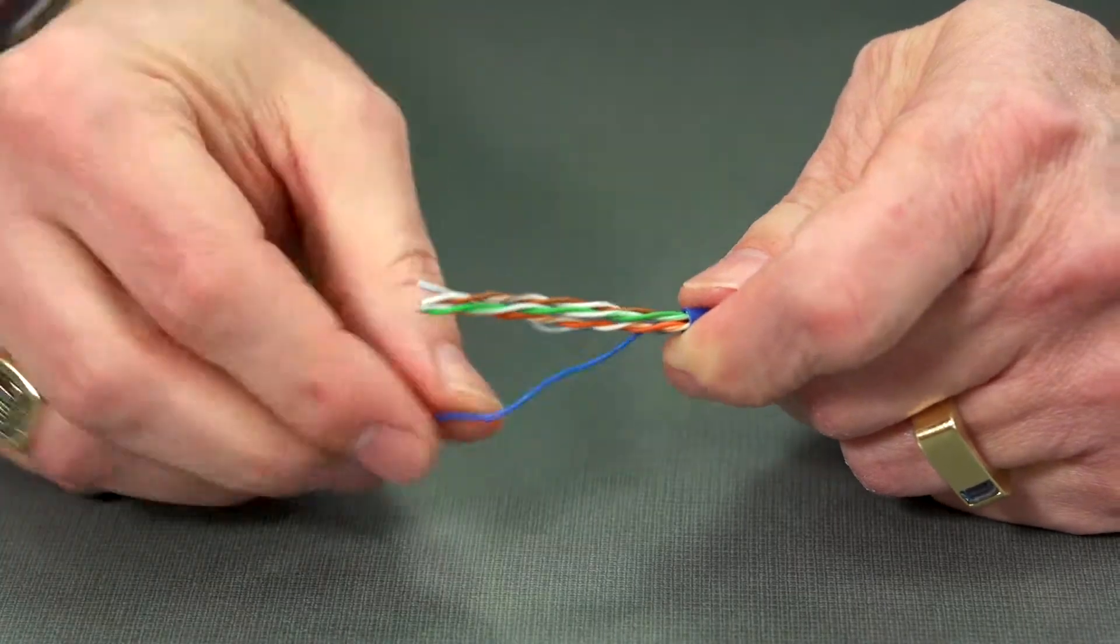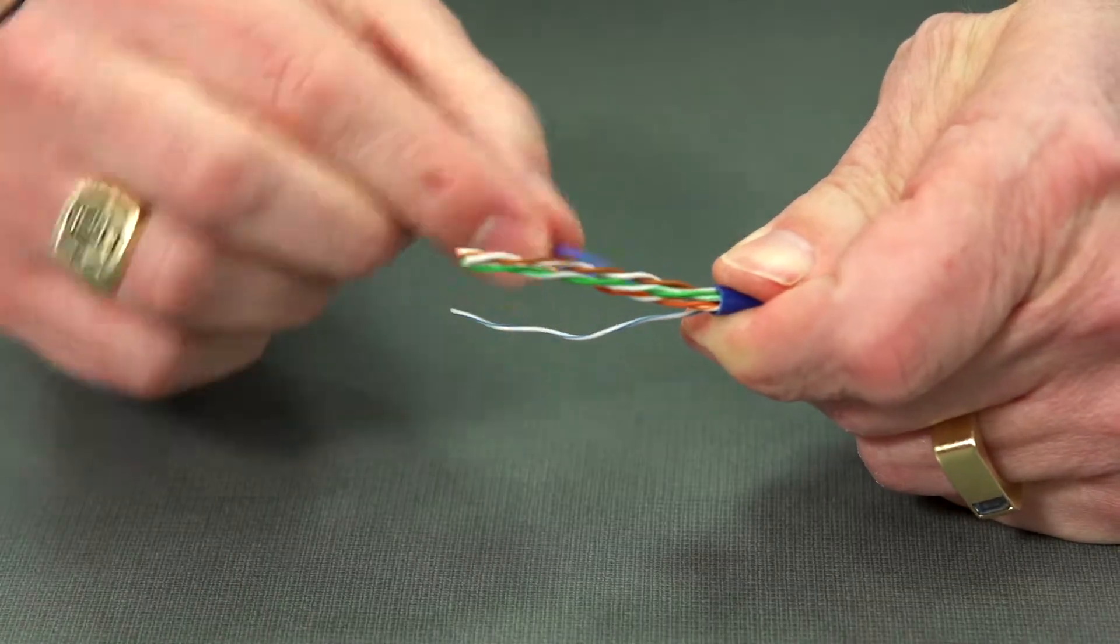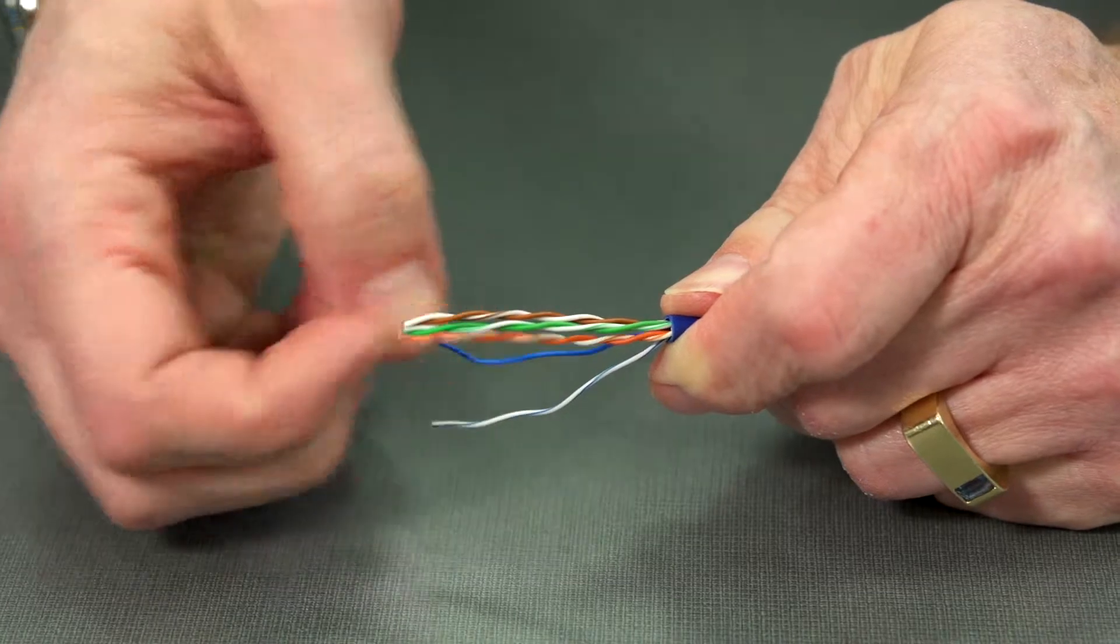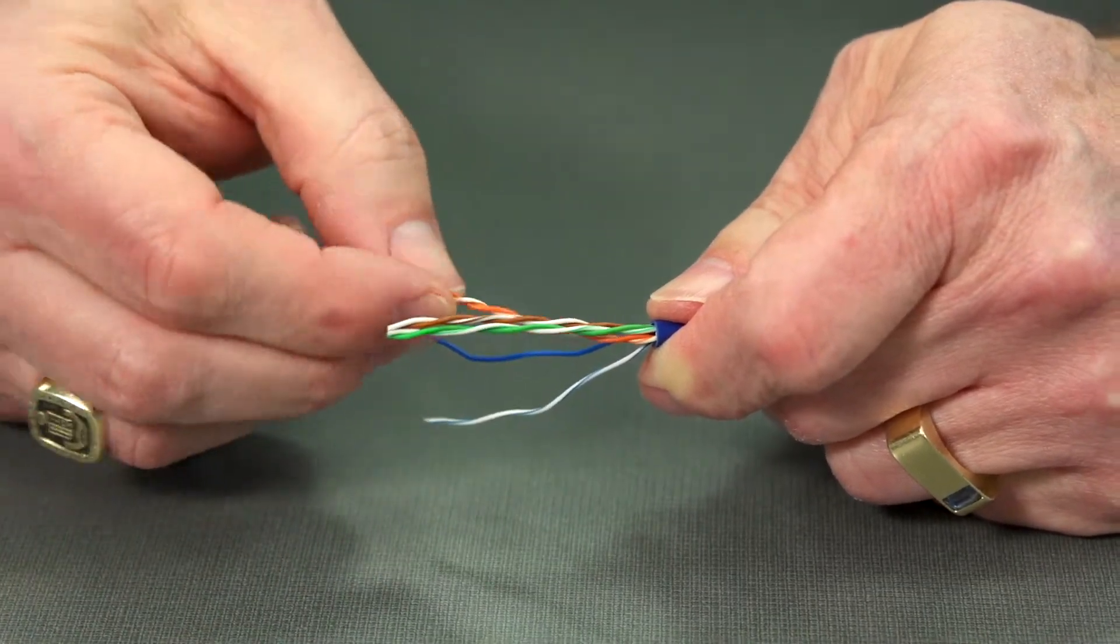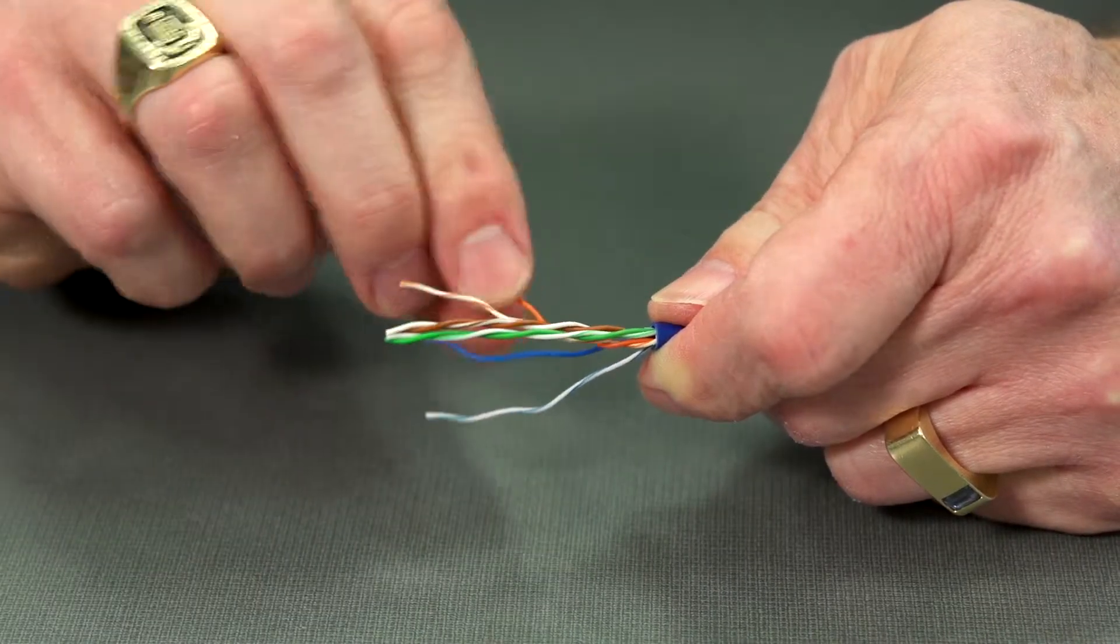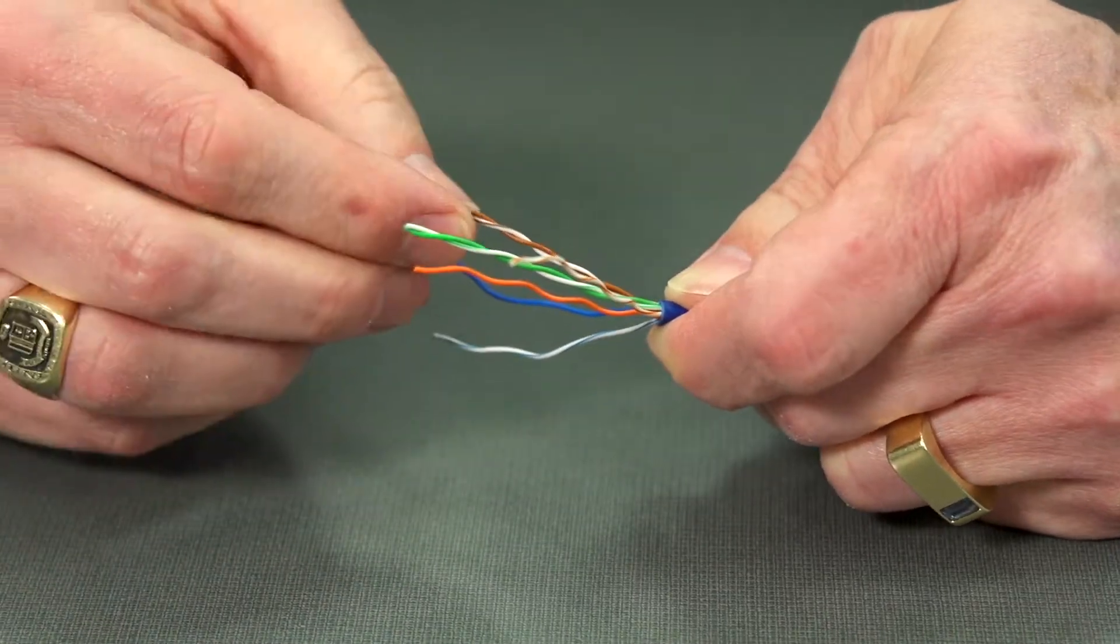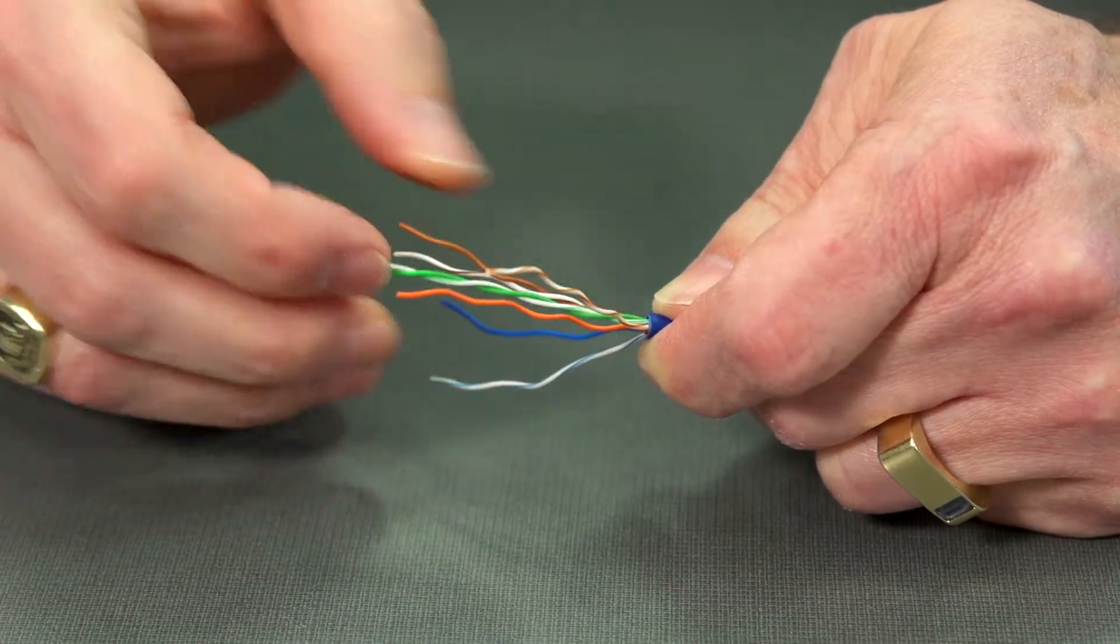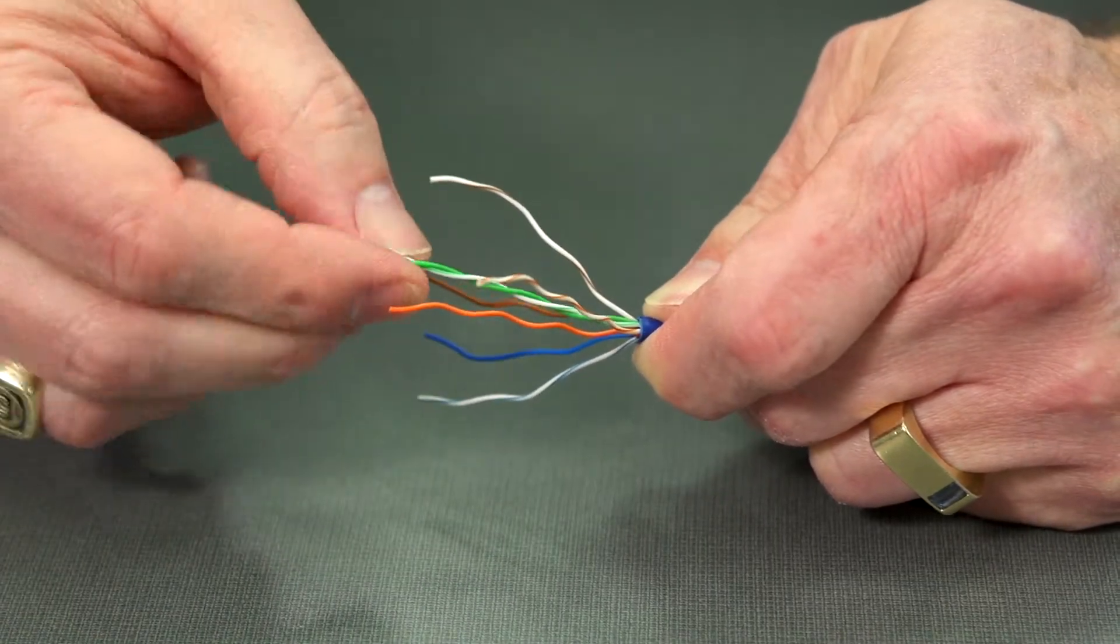We need to trim off this string and uncoil our pairs. Now I do like to make these long to start with because it's easier to work with and then trim them back. It's a little bit of a waste of cable, but not too much. And it does make things go quicker. Because if they're too short, it's really hard to get them in the right order. So we'll just unwrap these down to the jacket.